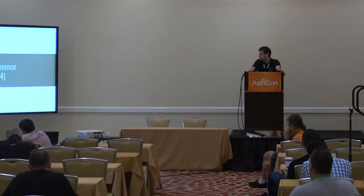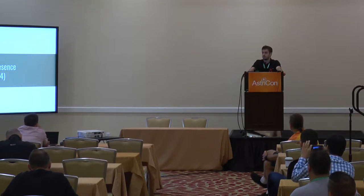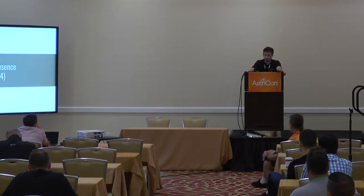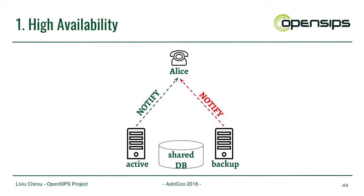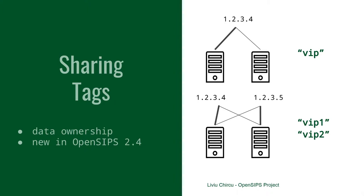Another SIP service we clustered in 2.4 using the newly added support is presence. We revisited some typical problems that needed to be solved. The basic one: assuming we have some presence data shared between servers operating in active-backup mode, you'd get a problem where, on some expiration event, all of them would notify the endpoint. We circumvented this problem by introducing the concept of sharing tags, which you'll see a lot throughout the cluster modules in 2.4.